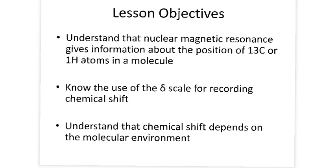The lesson objectives for this lesson are to understand that nuclear magnetic resonance gives information about the position of carbon-13 or proton atoms in a molecule, know the use of the delta scale for recording chemical shift, and understand that chemical shift depends on the molecular environment.